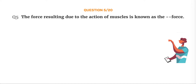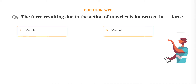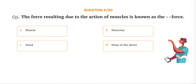Question number 5. The force resulting due to the action of muscles is known as blank force. Option A: Muscle. Option B: Muscular. Option C: Hand. Option D: None of the above.